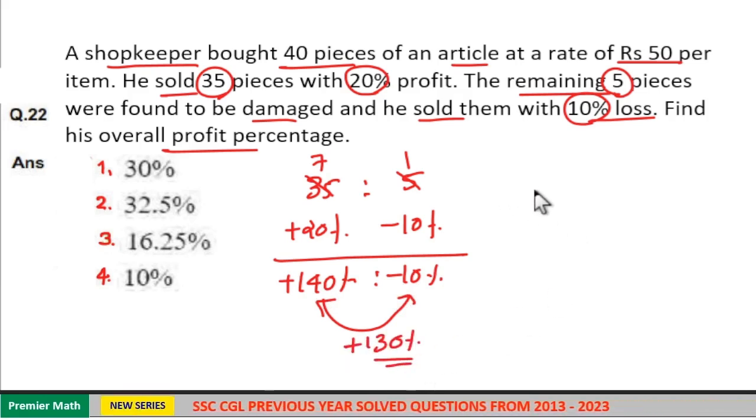This is the overall profit generator. So this 130 percentage is the overall generator for this 7 plus 1, 8 parts.